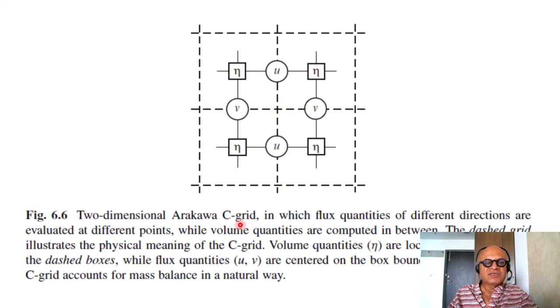Two-dimensional Arakawa C-grid in which flux quantities of different directions are evaluated at different points. So now you have staggered not only u in x but you have staggered v also in x and y so you are now arranging so that u and v are not being computed at the same grid point. So you are computing u here and v here. So you can see that u is in the y direction here, v in the x direction here.